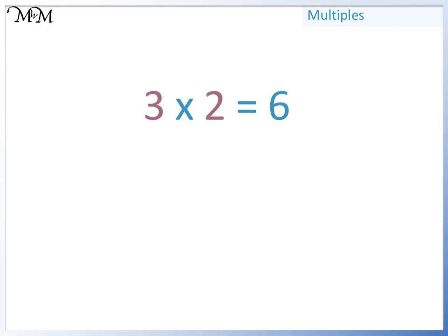3 and 2 are the numbers that we multiply together. They are the factors. 6 is the number that is produced by multiplying the two numbers together. 6 is the multiple.